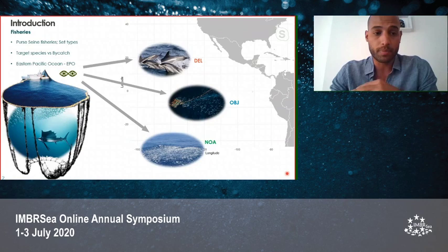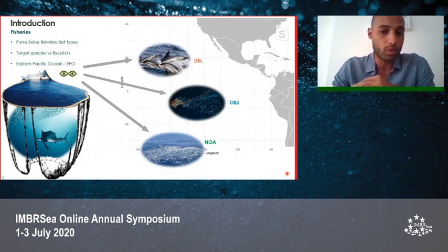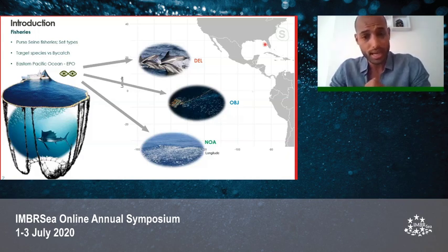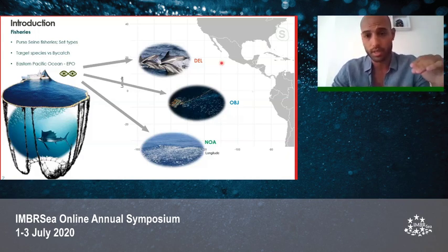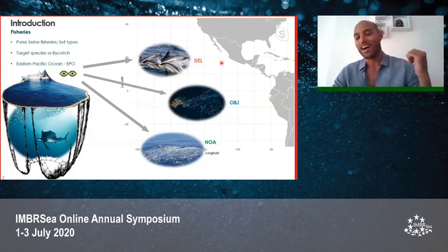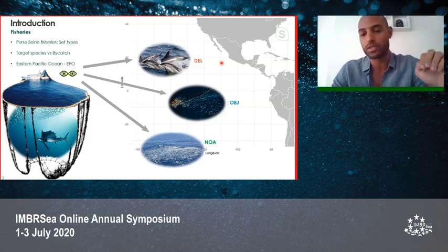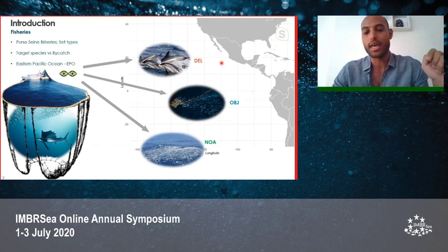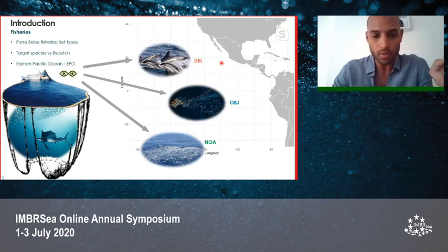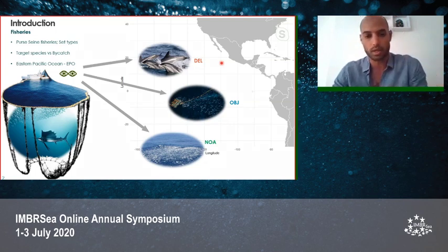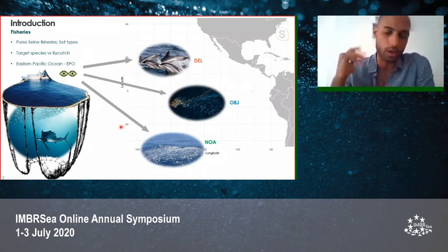The purse seine fishery also uses three main methods for spotting and surrounding tuna schools. They are called dolphin sets, when they spot dolphins at the surface associated with tuna schools; object set types, when tuna schools are associated with floating objects in the ocean; and non-associated set types, when tuna schools are identified at the surface by vessel equipment.